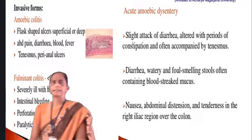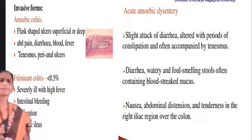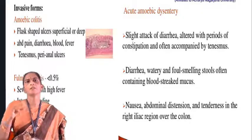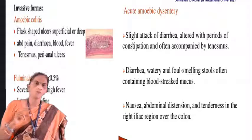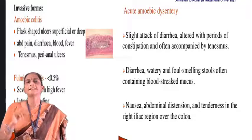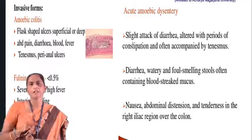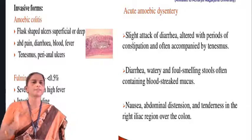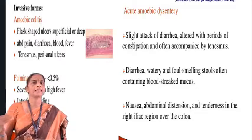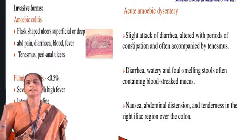Acute amoebic dysentery mainly causes diarrhea, and in very rare cases, constipation. The stool contains blood-streaked mucus — that is called amoebic dysentery. If the motion is thick and there is presence of blood streams, we can indicate it is amoebic dysentery.